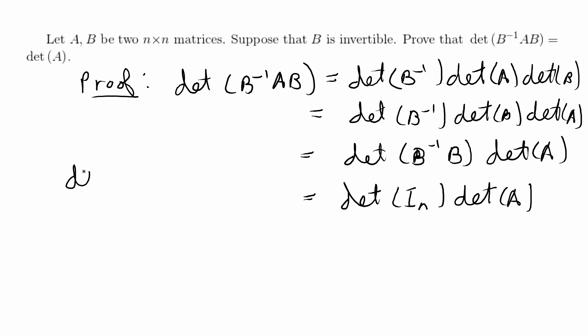I forgot there's another property. For any size identity matrix, the determinant of I for any n in the naturals is equal to 1 always, so we know that this is equal to 1 times the determinant of A, which is equal to the determinant of A.